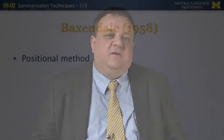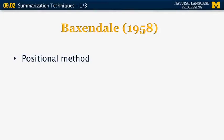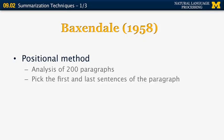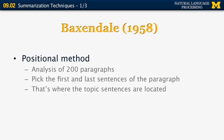Starting with one of the most classic papers by Baxendale from 1958, he introduced the so-called positional method, which works very well for some specific genres of text, for example scientific papers. He analyzed 200 paragraphs and found that the first and last sentences of the paragraph contain the most useful information, because that's where the topic sentences are typically located according to the style used for that type of document.